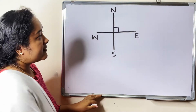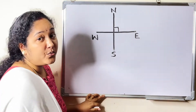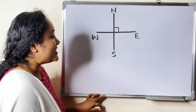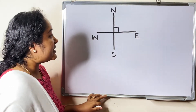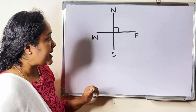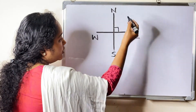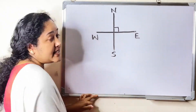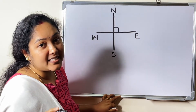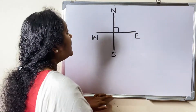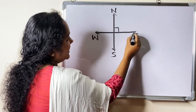By another right angle turn, you now reach facing South. This is another right angle. So the turn from North to South is by two right angles. That is a straight angle. The line from North to South is a straight line.